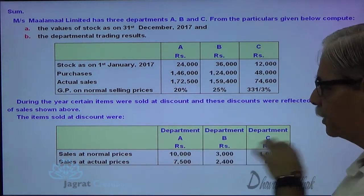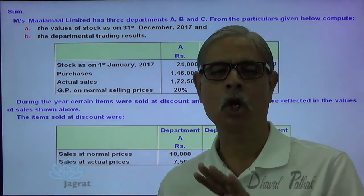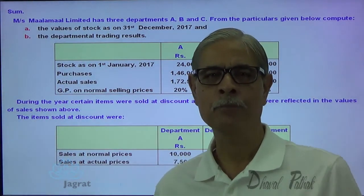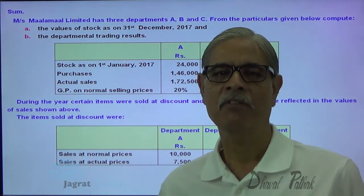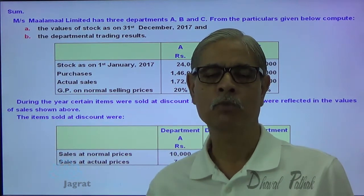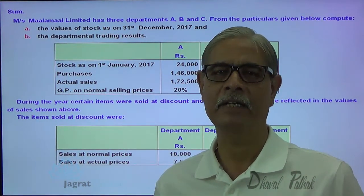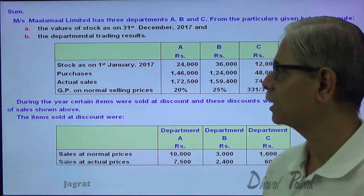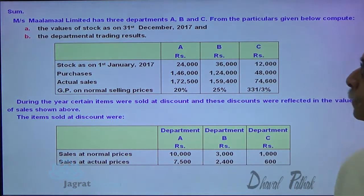Except for this discounted sales, the normal rate of gross profit was maintained. In light of this information, we are required to find out the closing stock as well as the actual profit earned in each department. That's the question that has been asked. Now let us start.